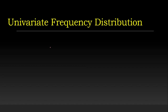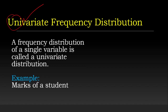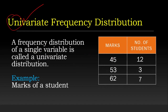Univariate means 'uni' means single, so univariate frequency distribution contains a single variable. For example, marks of a student — 45 marks in a particular subject scored by 12 students, 53 marks scored by 3 students, and 62 marks scored by 9 students in a particular class. This is called a univariate frequency distribution.